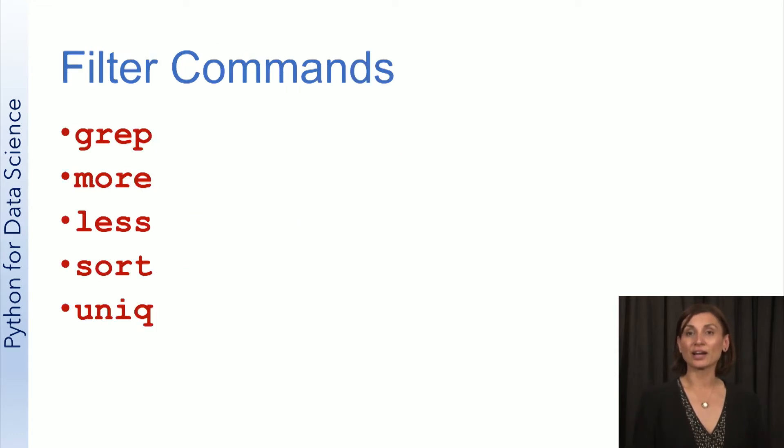So a filter is a program that takes inputs and transforms its inputs in some way. When the filter is placed after a Unix pipe, it takes the output of the command on the other side of the pipe and uses it as an input.